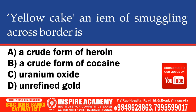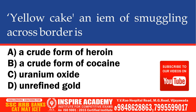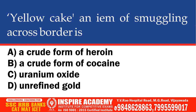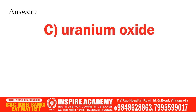Yellow cake, an item of smuggling across borders, is: a crude form of heroin, a crude form of cocaine, uranium oxide, or unrefined gold. And the correct answer is uranium oxide.